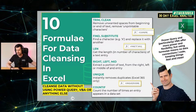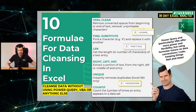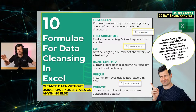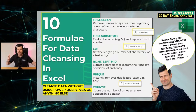We've got TRIM and CLEAN, FIND and SUBSTITUTE, LEN, RIGHT, LEFT, MID, UNIQUE, and COUNTIF. The COUNTIF formula is probably my most used formula in Excel for data analysis — we're going to see it time and again in 30 Day Excel Analyst. Power Query and VBA offer more power and flexibility, but using formulae means no data connections, so no irritating notification when you open the file, and no worries about VBA code. We can keep it super lean and mean.